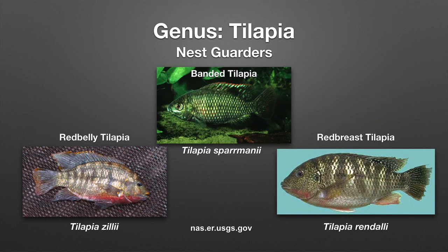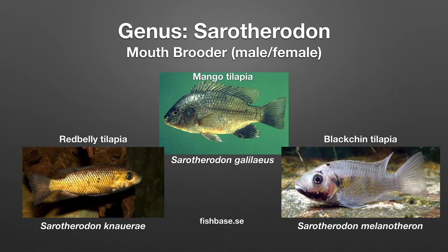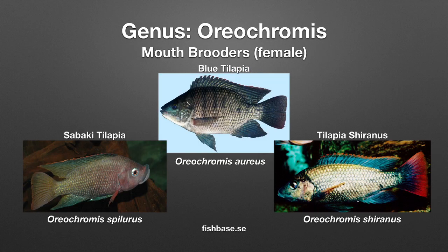The genus Tilapia is known for reproductive behavior as nest guarders — males and females release their gametes and the eggs lay on a substrate in the external environment. The genus Sarotherodon are known to be mouth brooders, with both male and female holding the eggs for incubation in their mouths after fertilization. Finally, the genus Oreochromis are mouth brooders where only the females guard eggs and fry in their mouths until the fry are ready and safe.